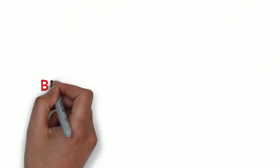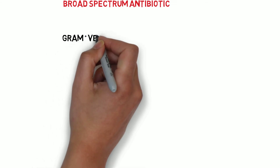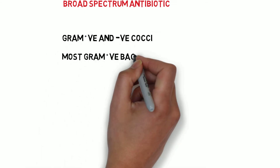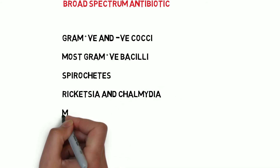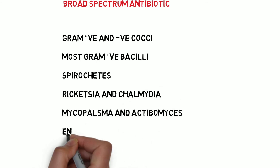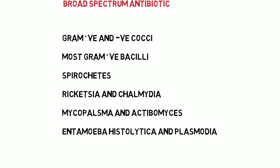Tetracycline is a broad-spectrum antibiotic. It acts against a wide group of bacteria such as gram-positive and gram-negative cocci, most gram-positive bacilli, spirochetes, rickettsia, chlamydia, mycoplasma, actinomyces, Entamoeba histolytica, and plasmodia.